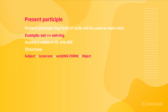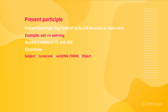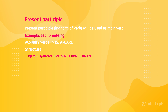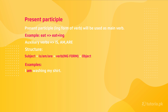Coming towards the structure of the positive sentence: Subject + is/am/are + present participle + object. The choice of is, am, or are depends on the subject. If the subject is singular, we use 'is'; if the subject is plural, we use 'are'; and if the subject is 'I,' we use 'am.' Then we have the present participle, that is the 'ing' form of the verb, and then the object.